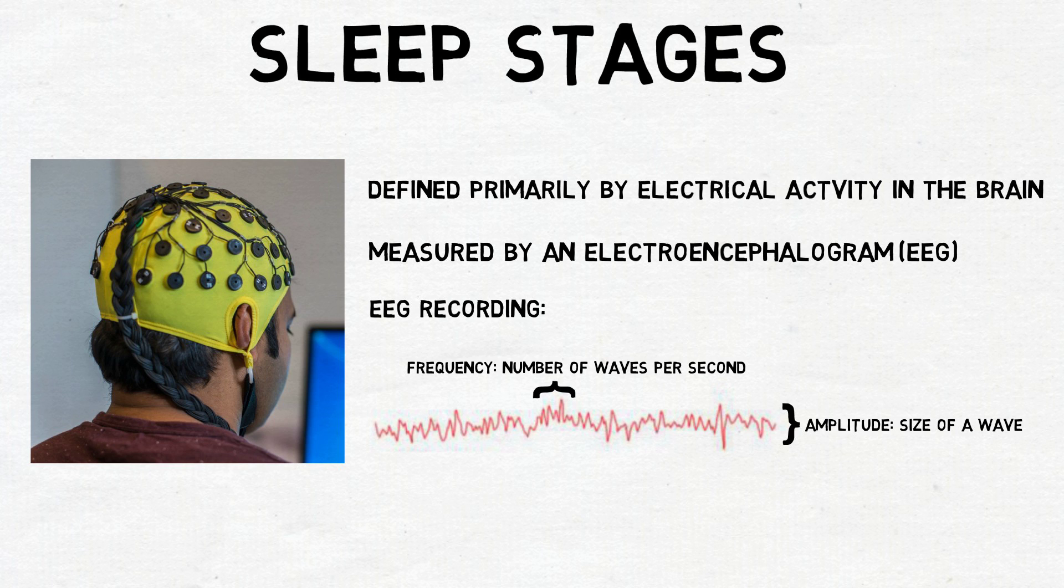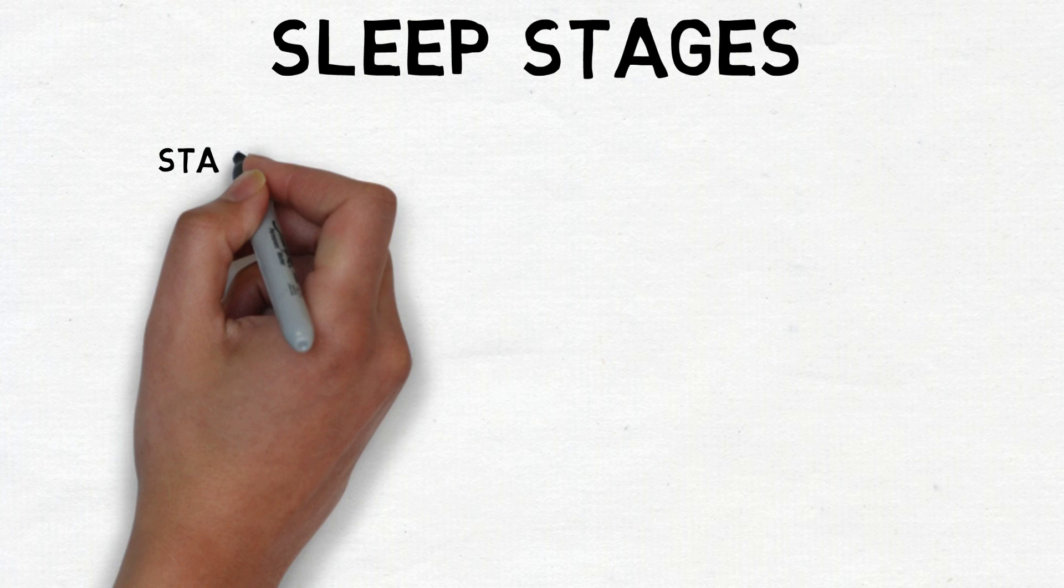The American Academy of Sleep Medicine classifies sleep as consisting of four stages. The first two stages involve light sleep. When someone begins to fall asleep, they enter stage 1, during which an EEG records low-amplitude waves of mixed but mostly high frequencies.